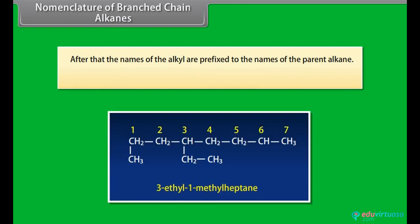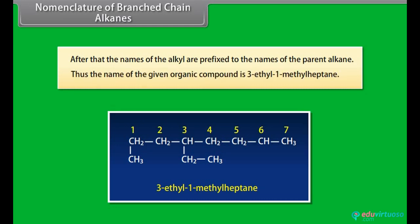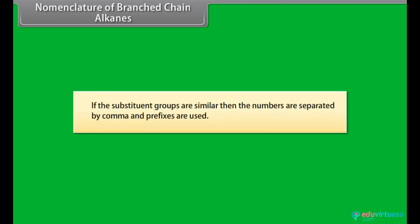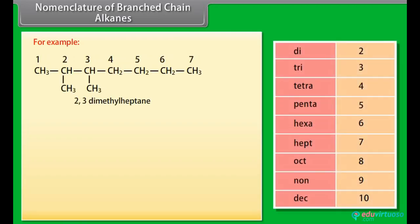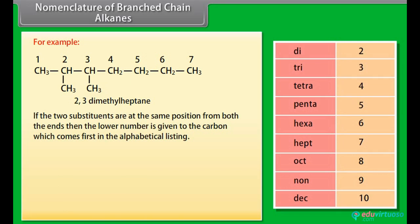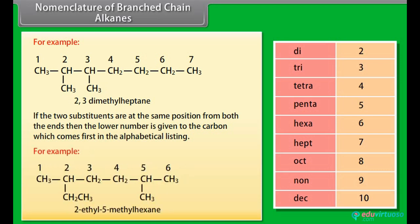The names of the alkyl groups are prefixed to the names of the parent alkane. Thus, the name of the given organic compound is 3-ethyl-1-methylheptane. If the substituent groups are similar, then the numbers are separated by commas and appropriate prefixes are used. If two substituents are at the same position from both ends, then the lower number is given to the carbon which comes first in alphabetical listing. For example, 2-ethyl-5-methylhexane.